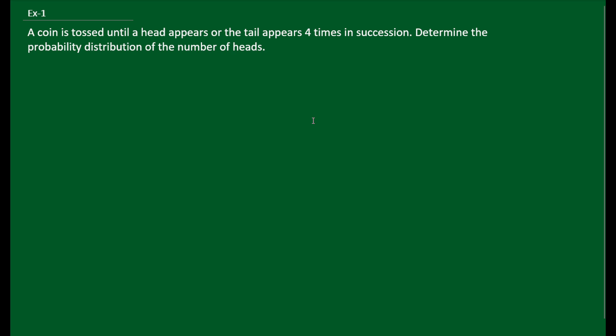Now let us take an example. A coin is tossed until a head appears or the tail appears four times. We keep tossing the coin until we get a head, or at most four times. We need to determine the probability distribution table for the number of tosses. So here capital X is the number of tosses.